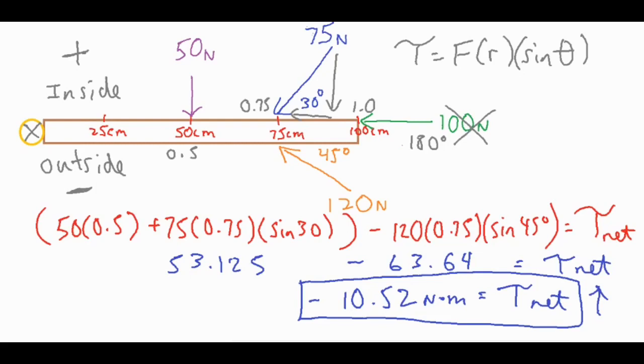So when working on a net torque problem, you basically have to account for the different forces, lever arms, and angles. And if they're pointing in opposite directions, you definitely want to change the sign of them because they're not working together.